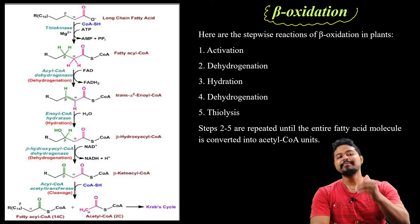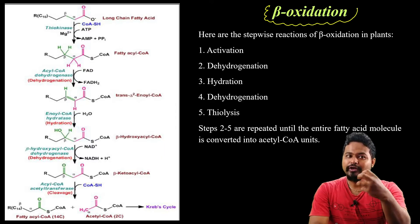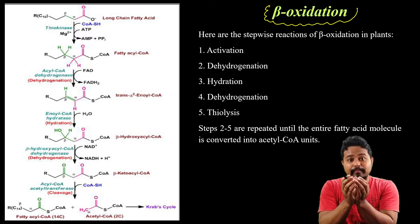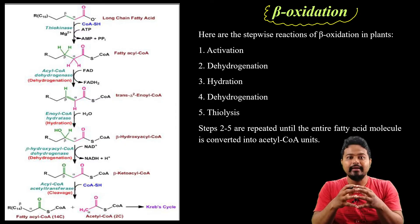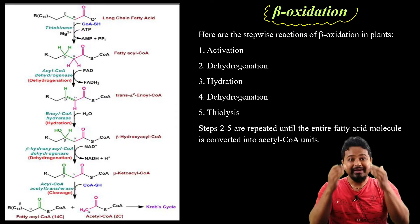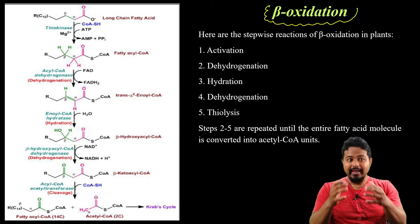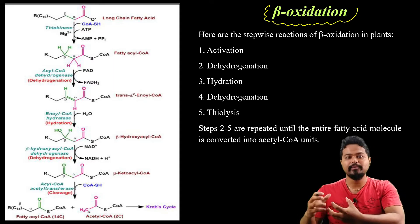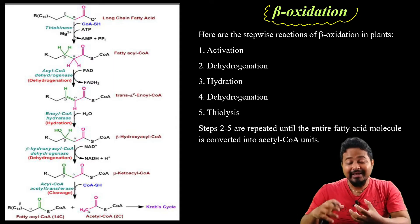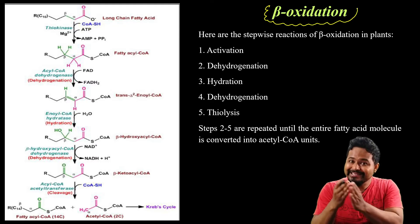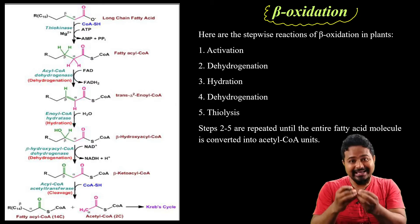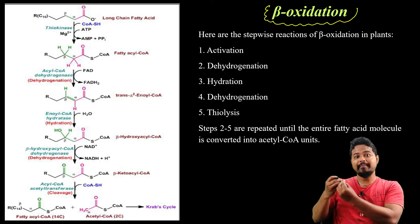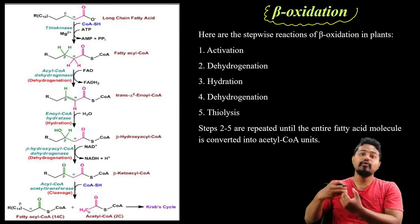What is beta-oxidation? Why is it important? Because we have fatty acid from triglyceride breakdown. We convert fatty acid into Acetyl-CoA, and this Acetyl-CoA is our ATP power plant.